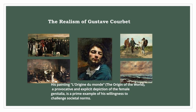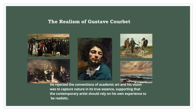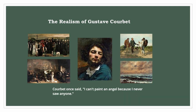Courbet's realistic depiction of subjects often considered vulgar or inappropriate by society's standards led to several scandals. His painting The Origin of the World, a provocative and explicit depiction of the female genitalia, is a prime example of his willingness to challenge societal norms. Courbet's artistic approach was characterized by his commitment to depicting reality as it is, capturing scenes from everyday life, landscapes, and portraits with honesty and precision. He rejected the conventions of academic art, supporting that the contemporary artist should rely on his own experience to be realistic. Courbet once said: 'I can't paint an angel because I never saw anyone.'